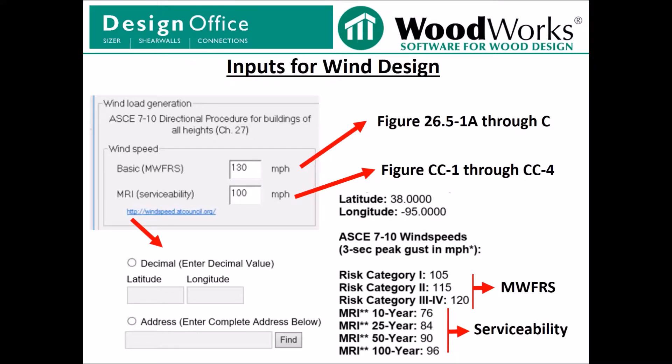The first input is the wind speed. There are two inputs: one for the basic wind speed and another for serviceability. Wind speeds come from ASCE 7-10 figures as referenced in the code. Alternatively, a quick link is provided which includes a tool that generates ASCE 7-10 wind speeds based on a latitude and longitude or a specific address. The tool reports wind speeds for input into Shearwalls for both the main wind force resistance system and serviceability design.